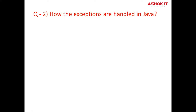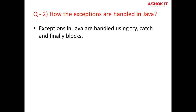Question number two: How are exceptions handled in Java? Exceptions are handled in Java using try, catch, and finally blocks. The try block contains the code or set of statements which are to be monitored for exceptions. The catch block catches the exceptions occurred in the try block. The finally block is always executed whether an exception occurred in the try block or not, and whether the exception was caught in the catch block or not.